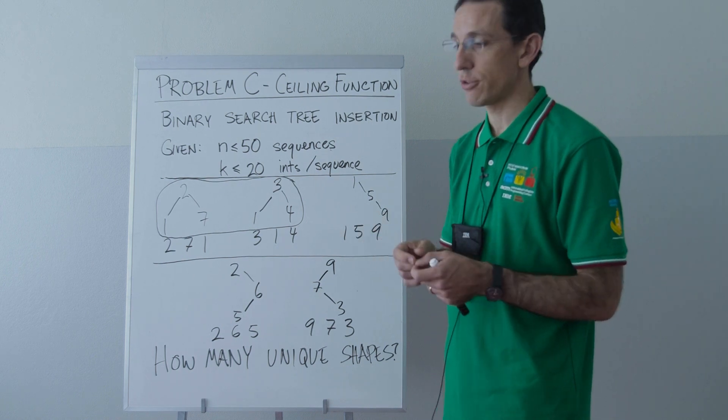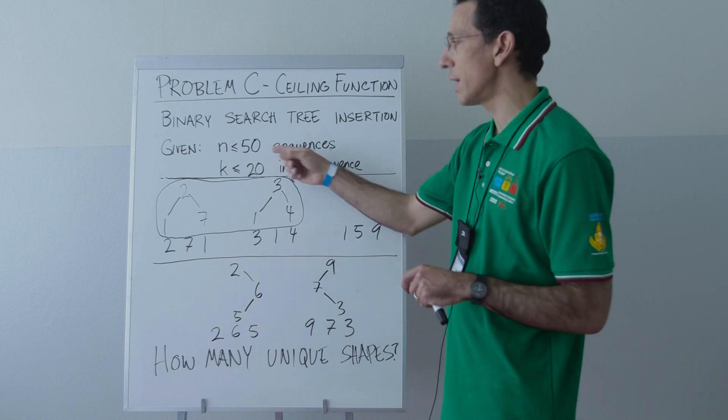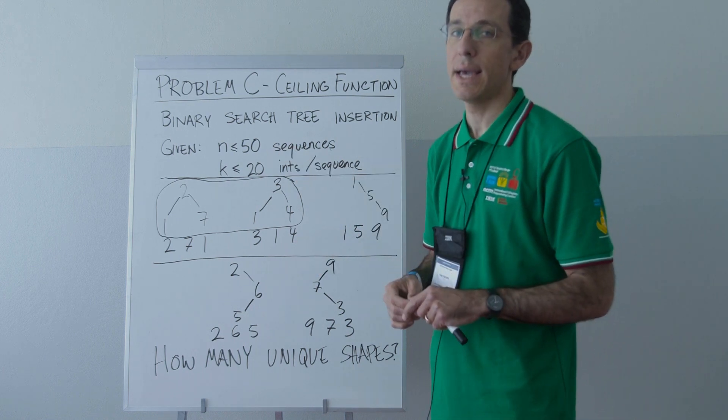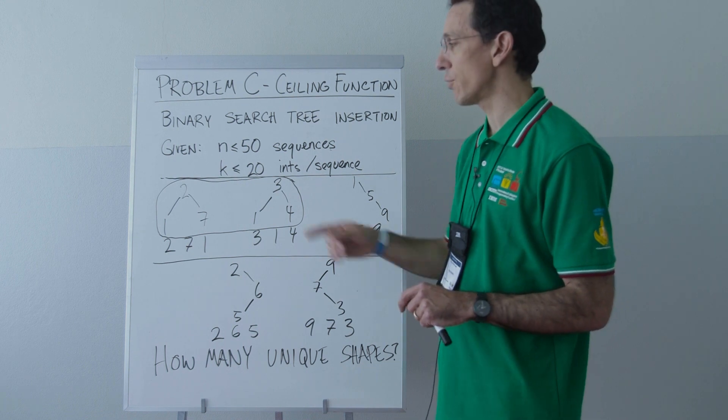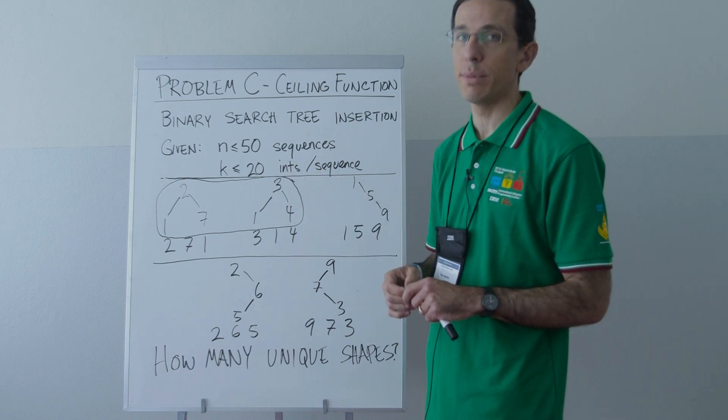Now you can do this by storing them all and comparing all against all, so that would be an n squared solution. n here is small enough, as well as k is small enough, that that would be a viable solution.